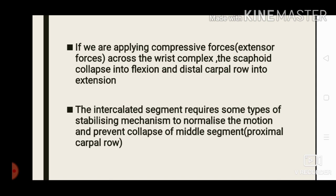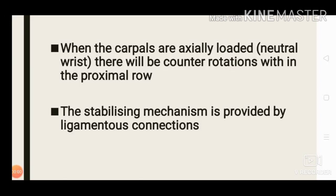The intercalated segment requires a stabilizing mechanism to prevent collapse of the middle segment, and this is provided by the wrist ligaments. When the carpals are axially loaded with the wrist in neutral position, there will be counter-rotation within the proximal row itself — between the scaphoid, lunate, and triquetrum — and these movements must be prevented by ligamentous connections.